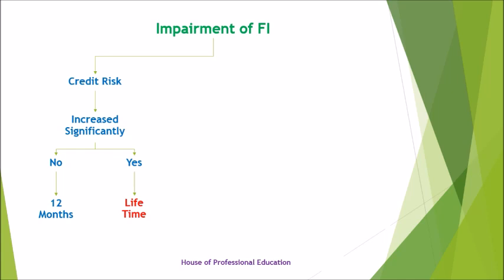At the current reporting date, prospectively, if the loss allowance that was measured at lifetime in the previous year but it is determined at the current reporting date that the credit risk is no longer significant to the entity, the entity shall measure the loss allowance at an amount equal to 12-month expected credit losses at the current reporting date, prospectively.